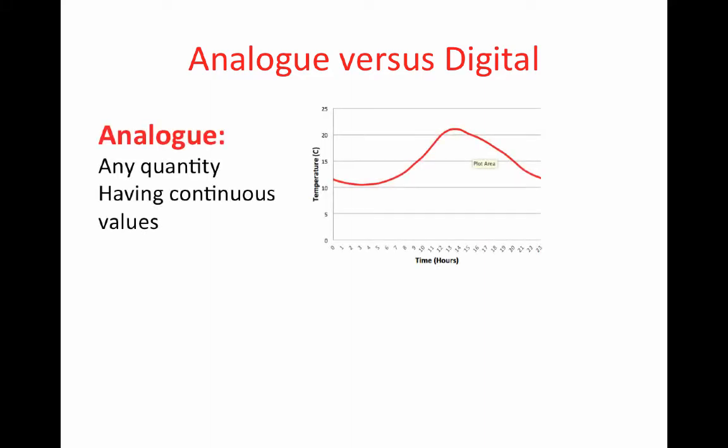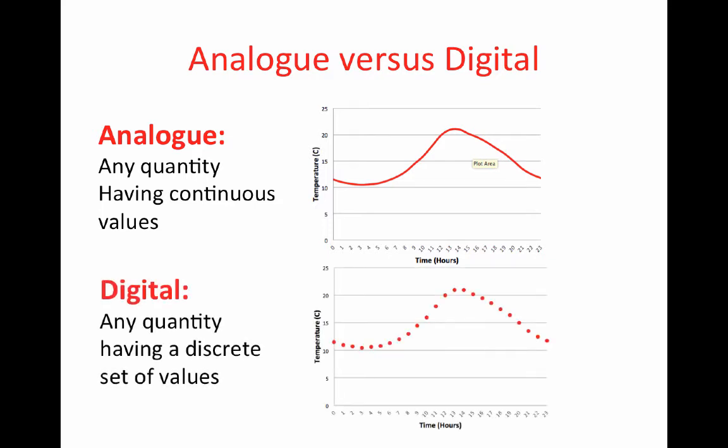Simply stated, an analogue quantity is one having continuous values. A digital quantity is one having a discrete set of values.